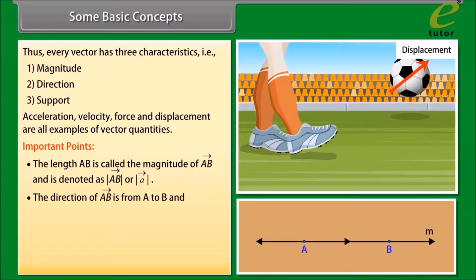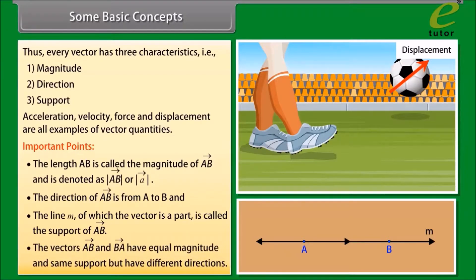The line M of which the vector is a part is called the support of vector AB. Vectors AB and BA have equal magnitude and same support but have different directions.